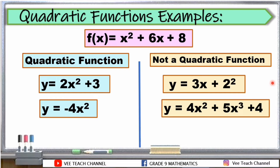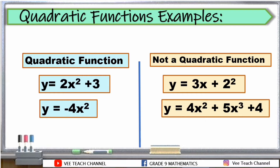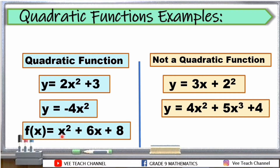Another one, we have f of x is equal to x squared plus 6x plus 8. Makikita naman natin dito, hindi y ang ginamit natin, pero f of x. Pwede rin ito. Makikita natin na ang highest exponent niya ay 2. Kaya, this is considered as a quadratic function. As I told you before, we can use f of x instead of y. So the quadratic functions are: y = 2x² + 3, y = -4x², and f(x) = x² + 6x + 8. Kailangan nating hahanapin yung squared as the highest exponent ng ating variable.